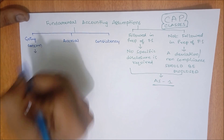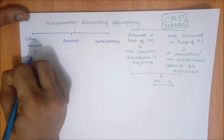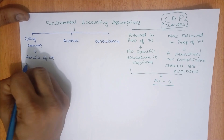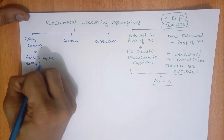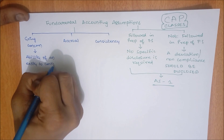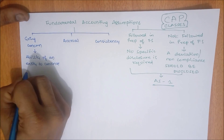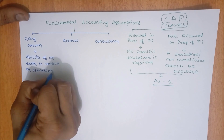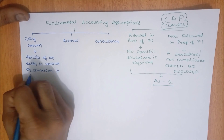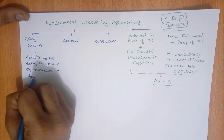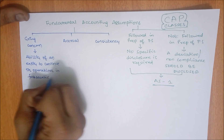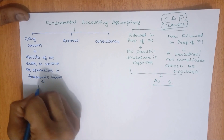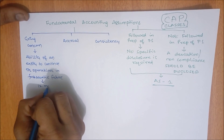What is going concern? Going concern is the ability of an entity to continue its operations in the foreseeable future. Foreseeable future usually means 12 months — one year.